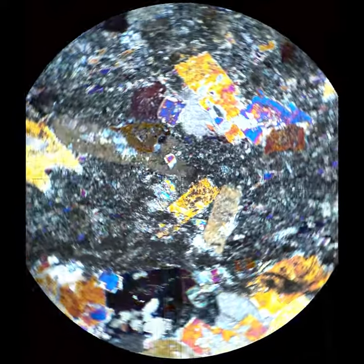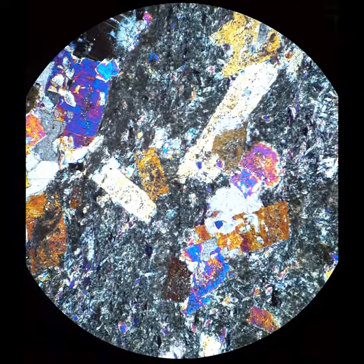Otherwise, it's a guilt-by-association kind of thing. You see it in blue schists, rarely in eclogites. So if you see a bunch of blue amphibole, it's something that you start thinking about.